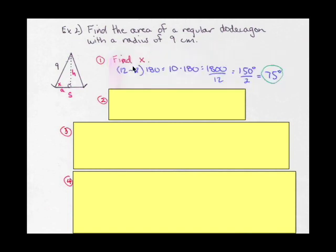A dodecagon has 12 sides, so 12 minus 2 times 180 is 1800 divided by 12, which is 150, and then cutting that in half gives me 75. So the angle x is 75 degrees.